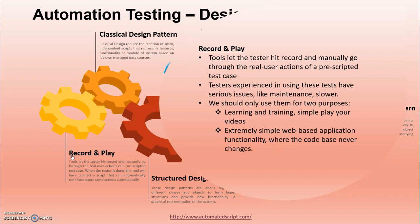Record and playback tools are useful in training because they provide automated test exposure to traditionally manual QA testers who don't know what code to write for a particular action. They are also used for extremely simple web-based application functionality where the code base never changes. However, record and play should not be your only source of truth when teaching automation — always learn through documentation and other online sources.